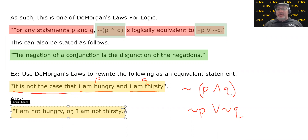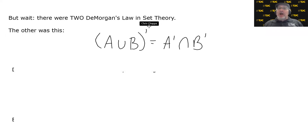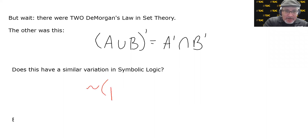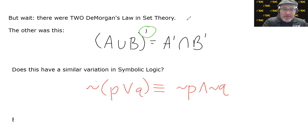The negation of a conjunction is a disjunction. There are two DeMorgan's Laws in set theory, and the other one says the complement of a union is equal to the intersection of the complements. This naturally raises the question: does this have a similar variation in symbolic logic? The negation of P disjunction Q — is that logically equivalent to the negation of P conjunction the negation of Q? Remember, complements are essentially negations, union is essentially a disjunction, and intersection is essentially a conjunction. So is that actually true — are they logically equivalent?